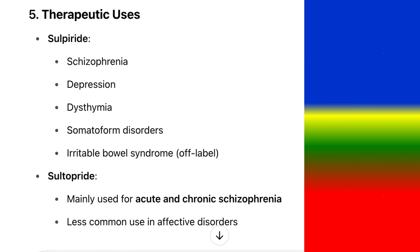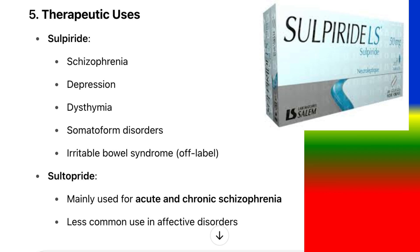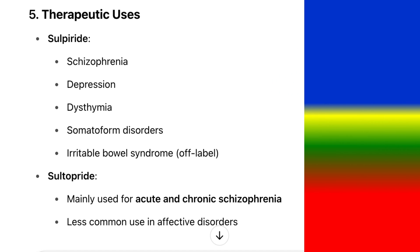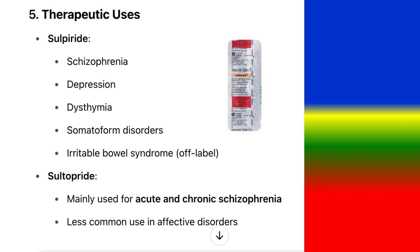5. Therapeutic uses: Sulpiride is used for schizophrenia, depression, dysthymia, somatoform disorders, and irritable bowel syndrome (off-label). Sultopride is mainly used for acute and chronic schizophrenia, with less common use in affective disorders.